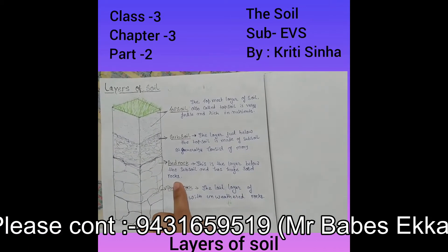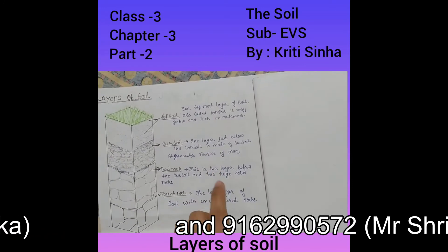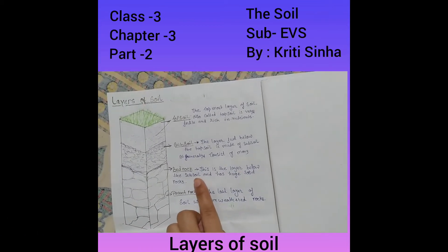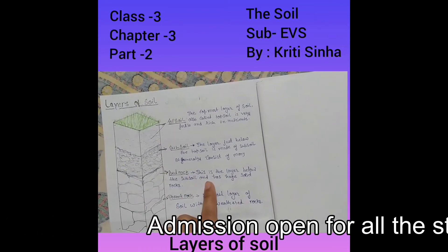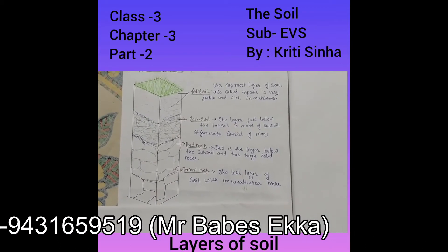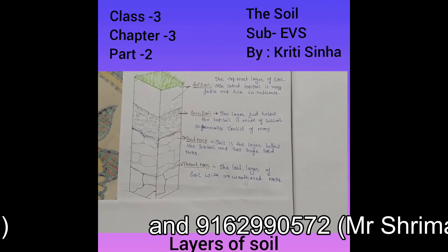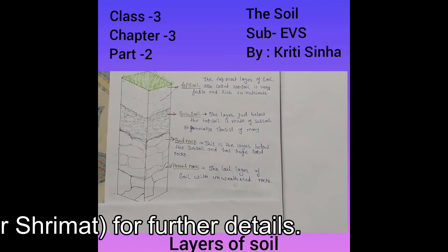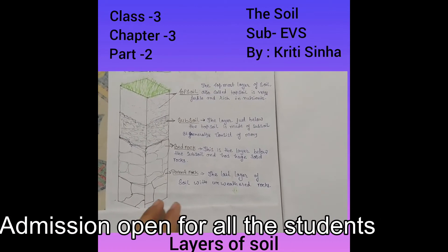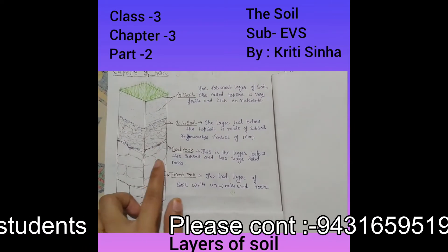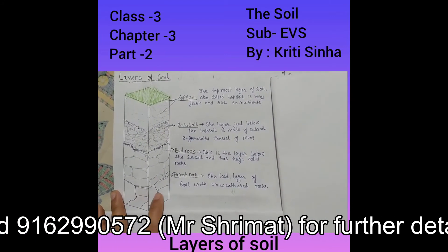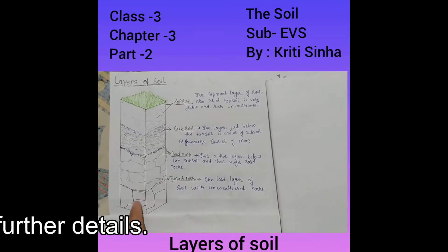Number three is bedrock. Bedrock is the layer below the sub soil and has huge solid rocks — not as fine as sub soil but having big rocks. It is located below the sub soil and above the parent rock. Bedrock forms a non-porous layer and allows water to trickle down and collect as underground water. Underground water is collected in this layer because there is no space between the rocks.